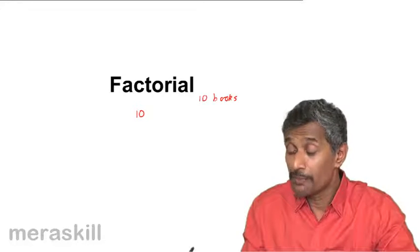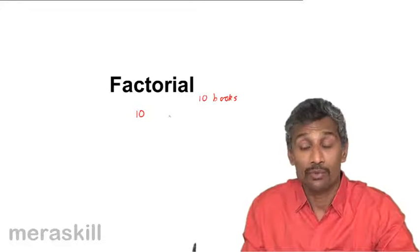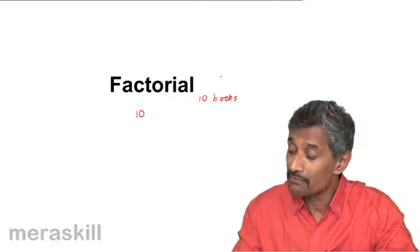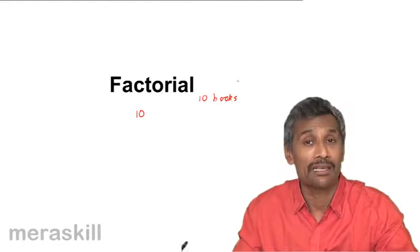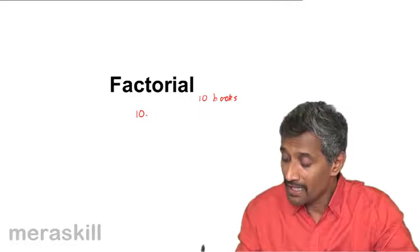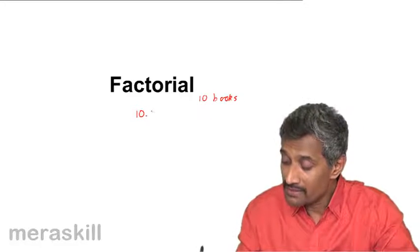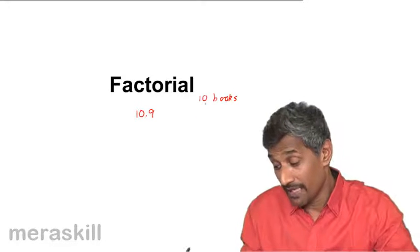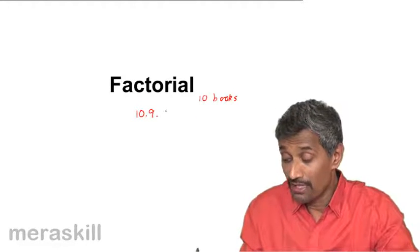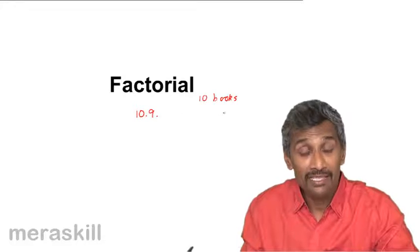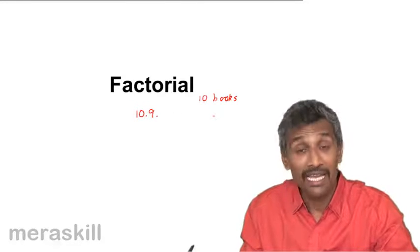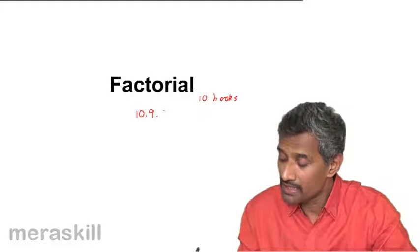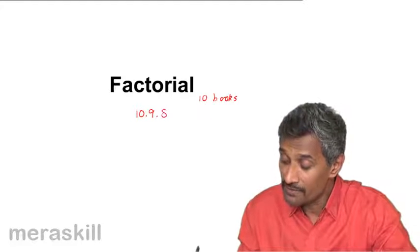Now I need to pick up the second book. What is left is only 10 minus 1, that is 9 books. So the second book can be selected in 9 ways. Then 8 books are left, and out of these 8 we need to select the third book — that is one book in 8 different ways.